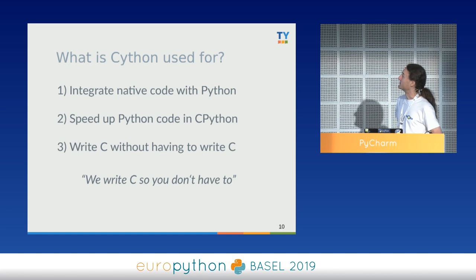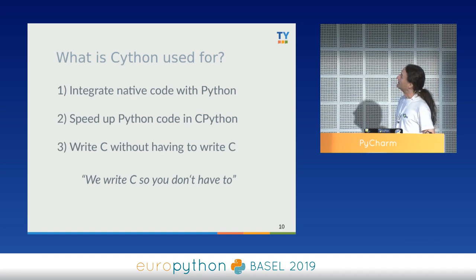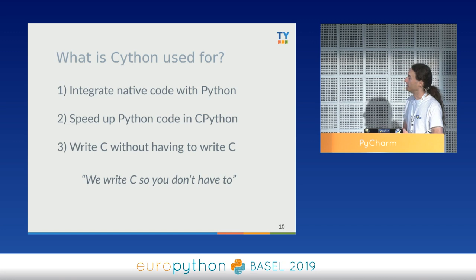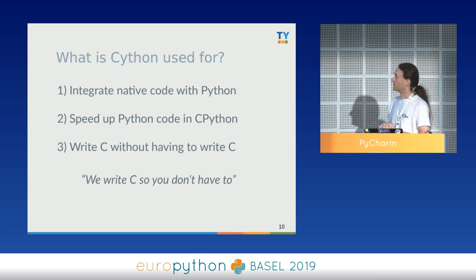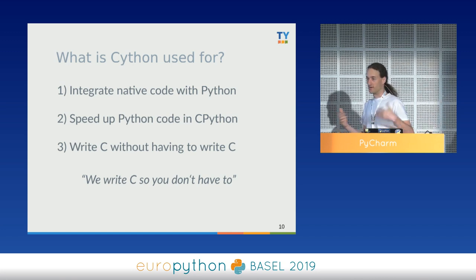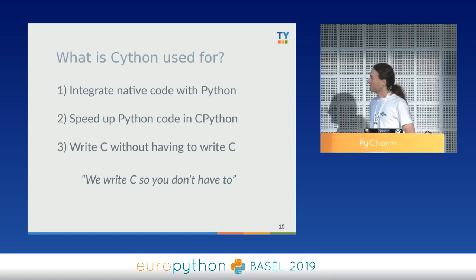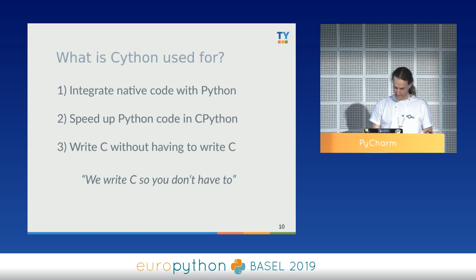So what is Cython actually used for? It's used for integrating native code with Python, for speeding up Python code in CPython, and some people even use it to write C without having to write C. Basically, we write C so you don't have to.